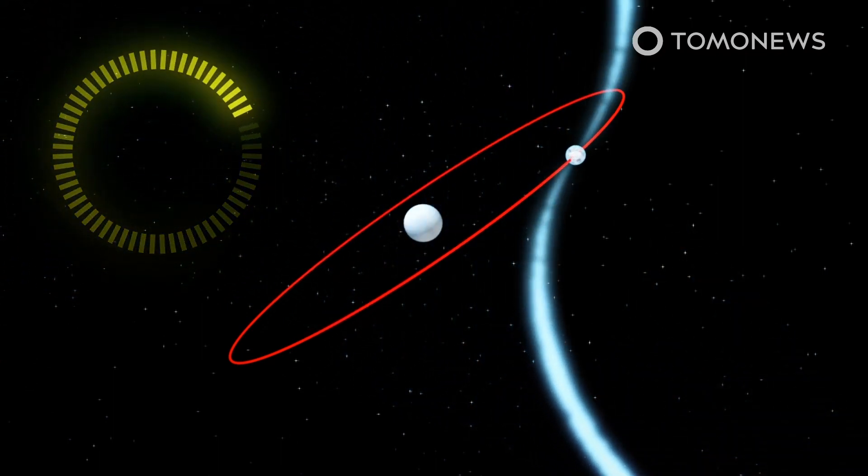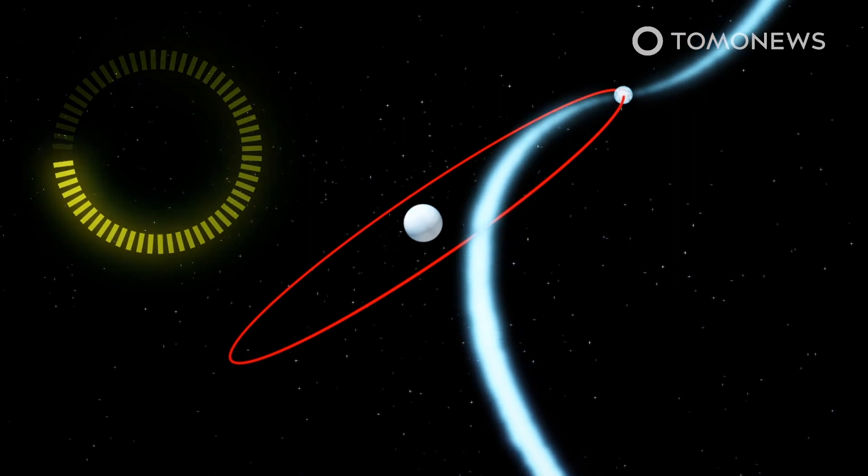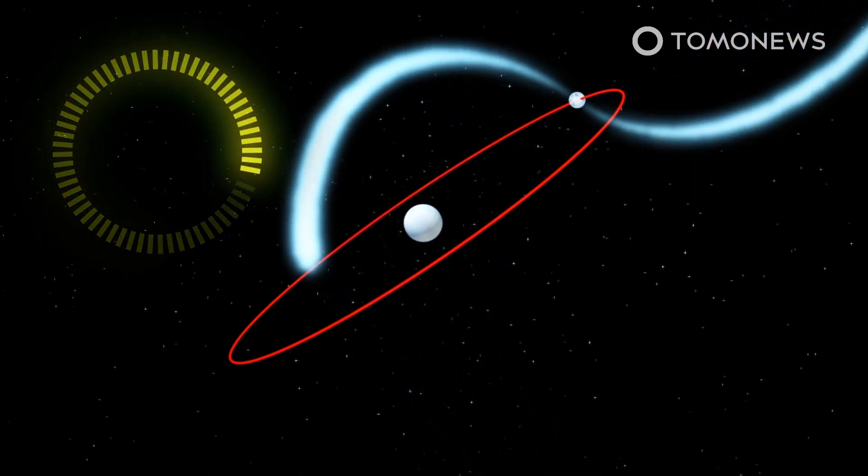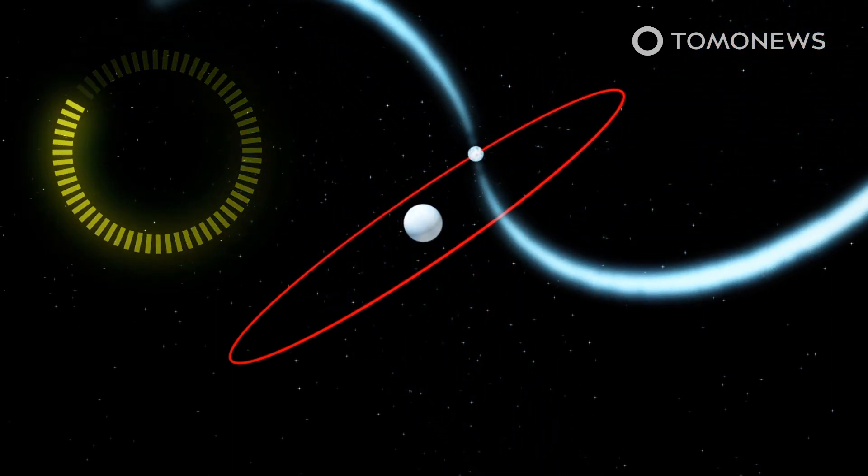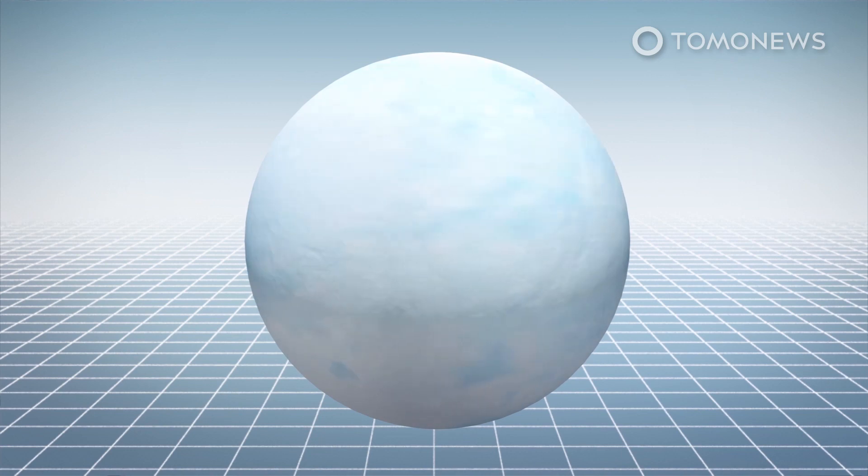According to OzGrav, the dwarf star's stellar companion, an exotic pulsar, courses around the bigger star in a speedy five-hour orbit. The white dwarf is the size of the Earth.